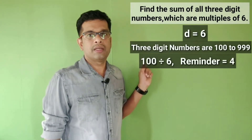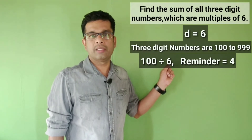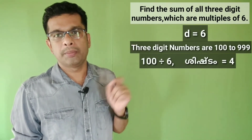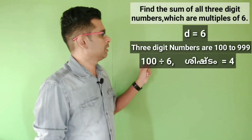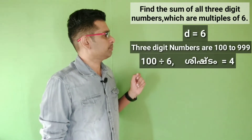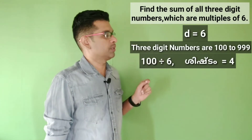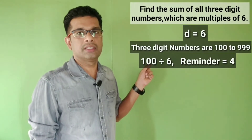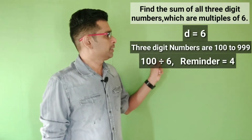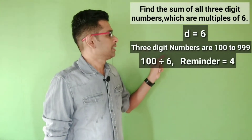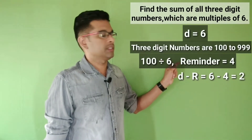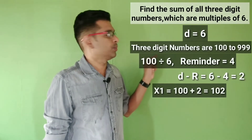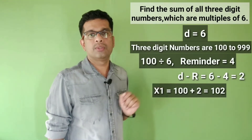We will multiply to find the first three-digit multiple. 100 divided by 6 gives a remainder of 4. Six minus 4 is 2, so the common difference is 6. We add 100 plus 2, which equals 102. So the first term, x1, is 102.